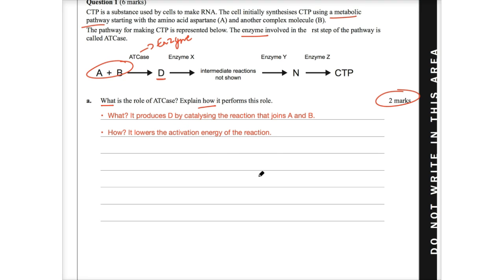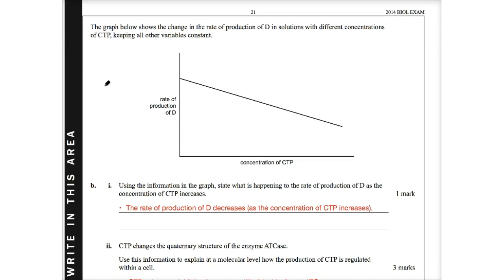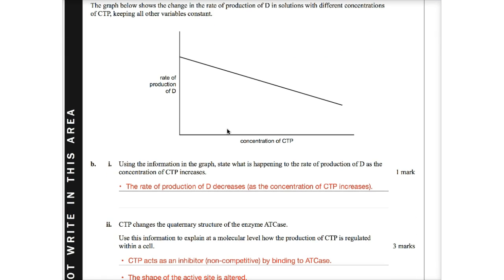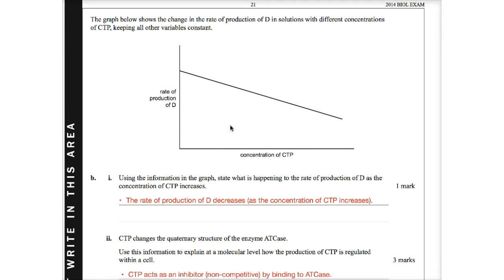So moving forward from A, I just want to go down into the next one, which is B. So now we're moving into B, part I and II. And essentially, we see this graph. So the graph below shows the change in the rate of production of D in solutions with different concentrations of CTP, keeping all other variables constant. So look at the rate of production here and the concentration of CTP. I haven't even looked at the stem of the question, and I clearly see that there is a negative relationship between these two variables. As the concentration of CTP increases, the rate of production of D decreases.